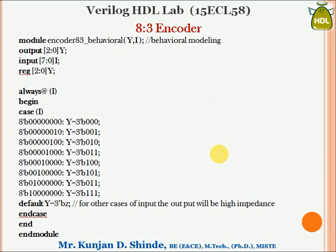Now let us implement the 8-to-3 encoder using behavioral style of modeling. We start with the keyword module, followed by the module name and the terminal list. Y and I are the outputs and inputs. Output is 2 down to 0, input is 7 down to 0. The output is declared as REG so it can be updated inside the always block. In behavioral modeling, we define functionality in terms of the truth table using a case statement.